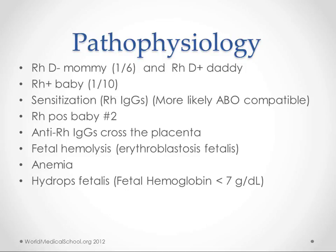This is more likely to happen in ABO compatible mother and child, because if the child's blood is not ABO compatible, then once it's introduced to the mother's immune system, it will be destroyed so quickly that the mother's immune system won't have time to react to the RH antigen.